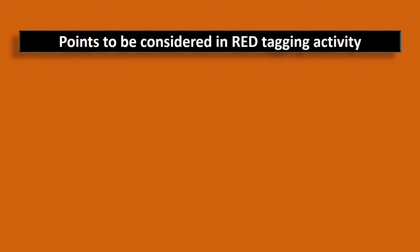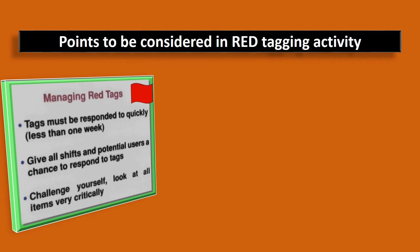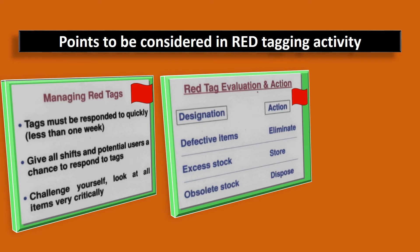Points to be considered in the red tagging activity: tags must be responded to quickly — less than one week. Suppose you have put a red tag on some items; those items may not be required by you but may be required by somebody else, another department, or another plant of your same company. So you need to give time to them and inform them so they can see whether they can use those items. Give all shifts and potential users a chance to respond to the tag. Challenge yourself — look at all items very carefully before putting a red tag. If items are defective, eliminate them. If excess, send to store. If obsolete, dispose.